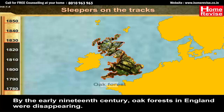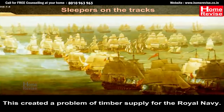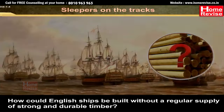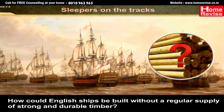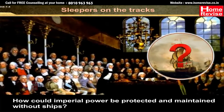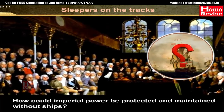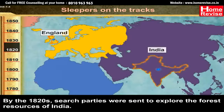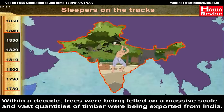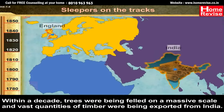By the early 19th century, oak forests in England were disappearing. This created a problem of timber supply for the Royal Navy. How could English ships be built without a regular supply of strong and durable timber? How could imperial power be protected and maintained without ships? So by the 1820s, search parties were sent to explore the forest resources of India. Within a decade, trees were being felled on a massive scale and vast quantities of timber were being exported from India.